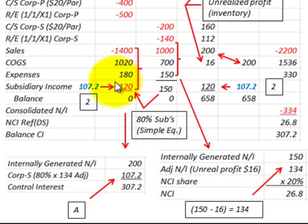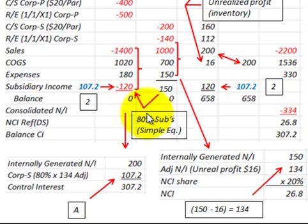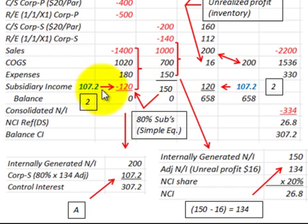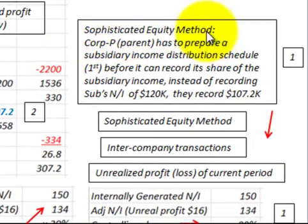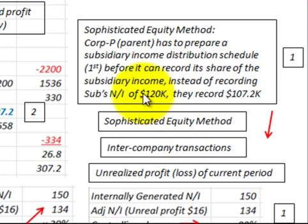With the simple equity method, we simply take the percentage of earnings the subsidiary makes and record the parent's portion. Now with the sophisticated equity method, we don't do it that way — we must first calculate the income distribution from the income distribution schedule. Instead of recording the subsidiary's net income at $120,000, the parent must record the calculated amount of $107,200.